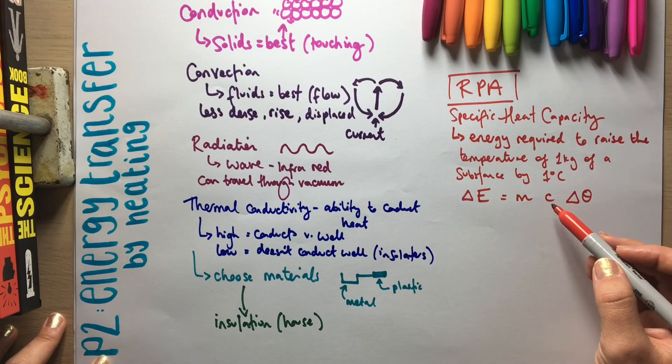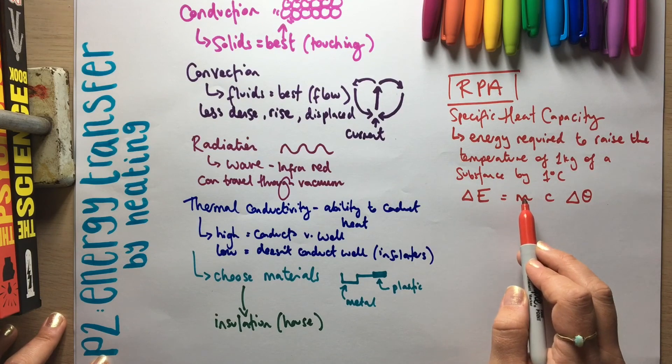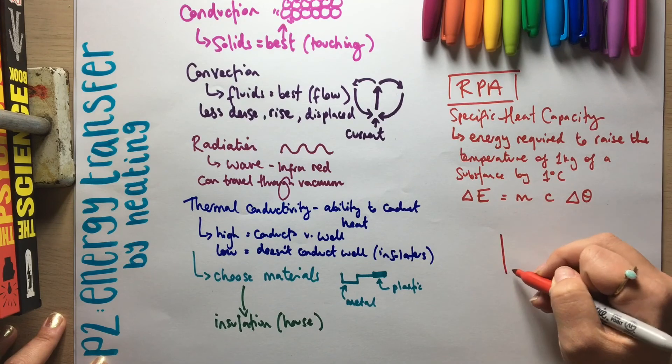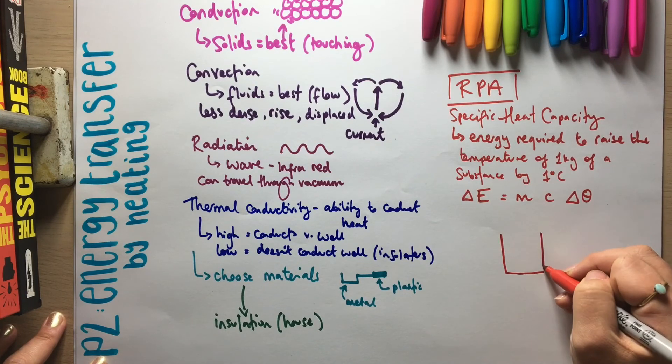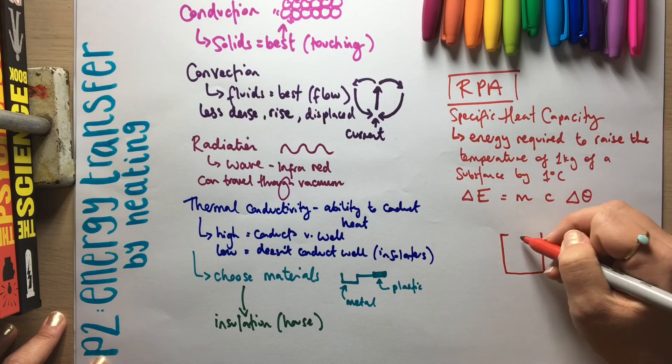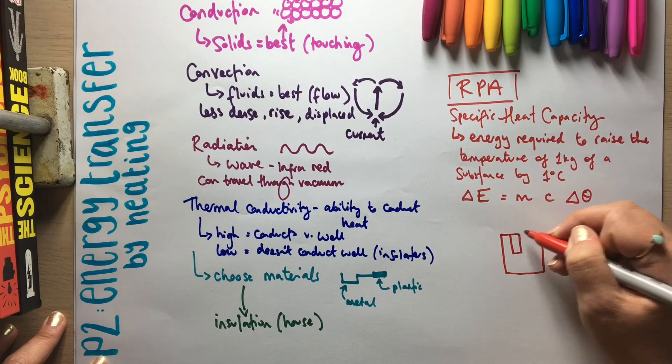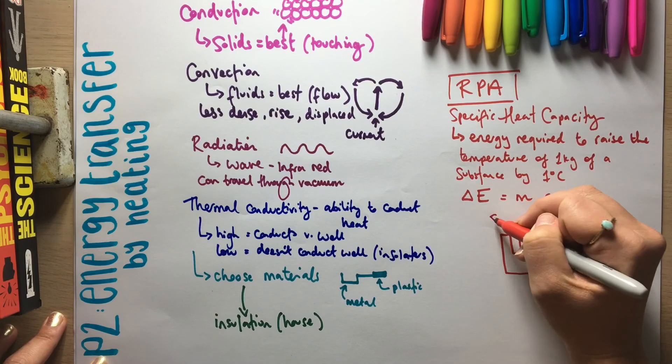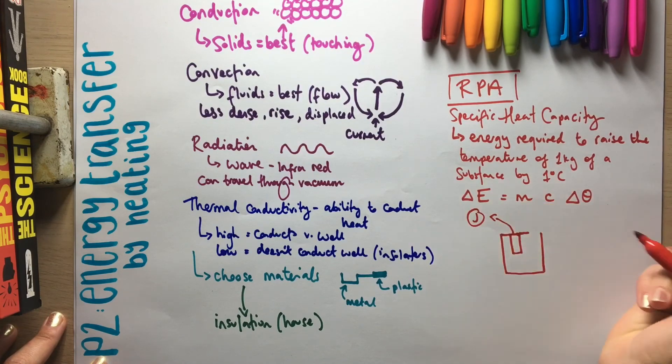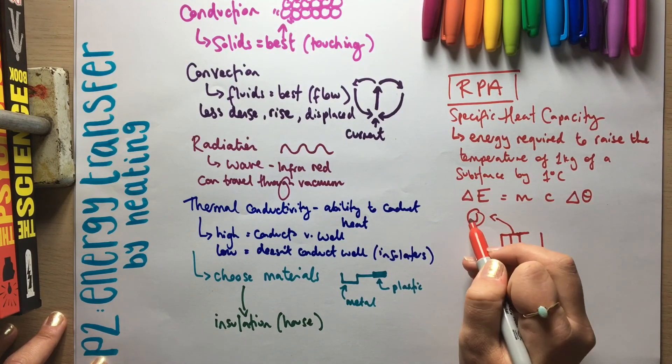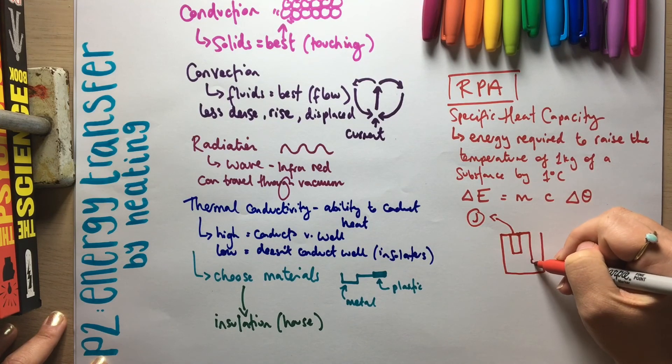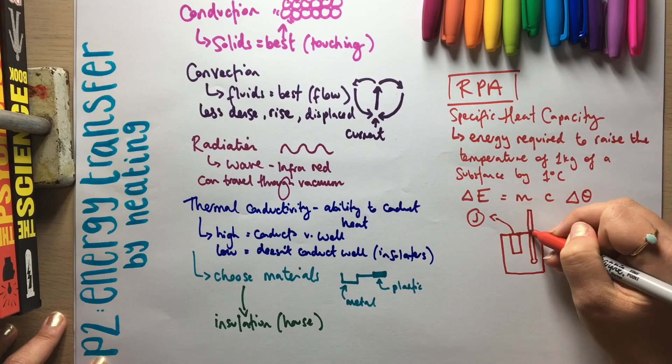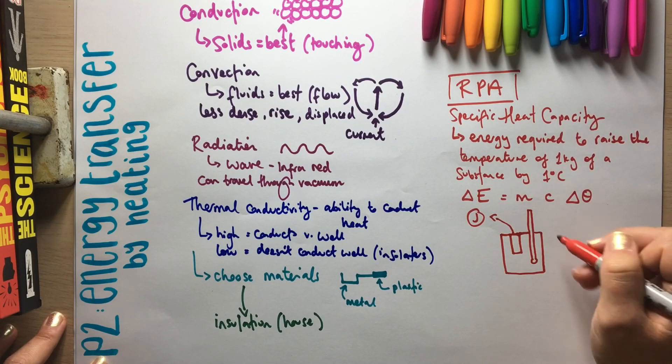So to measure the specific heat capacity of something, we need the energy, we need the mass, and we need the change in temperature. Usually what happens is it's a metal block, and in the metal block are two holes. One usually has a heater, which is attached to a joule meter to measure the energy and then attached to a power pack.